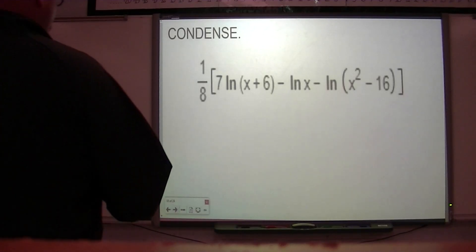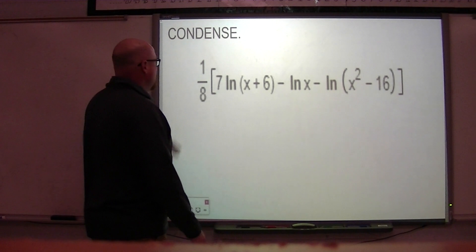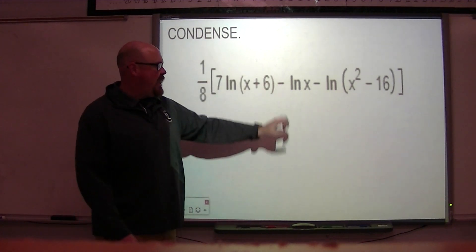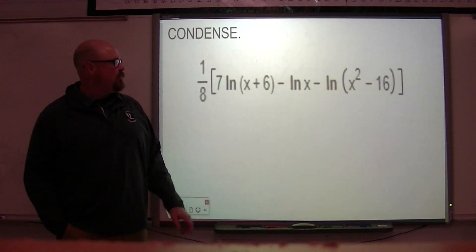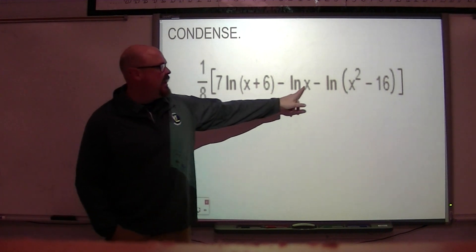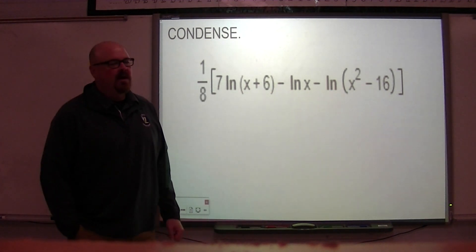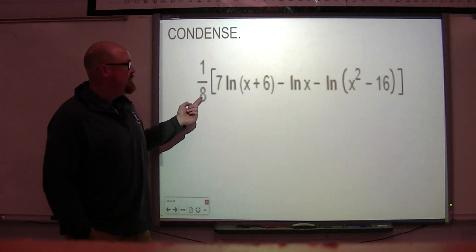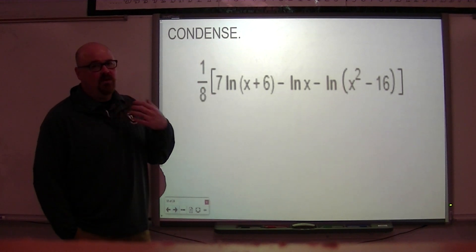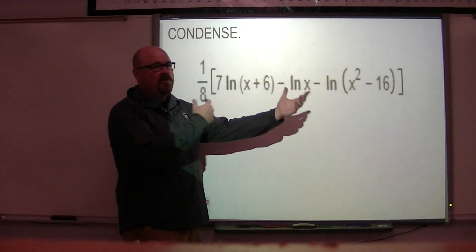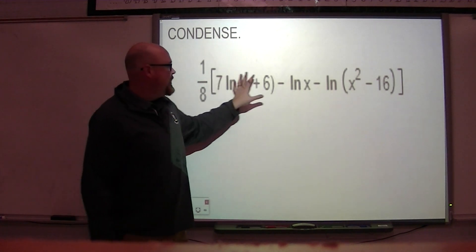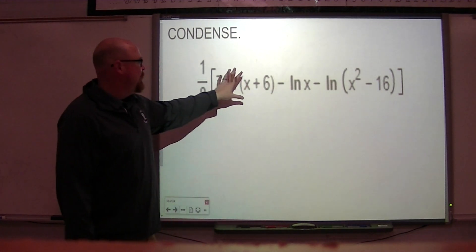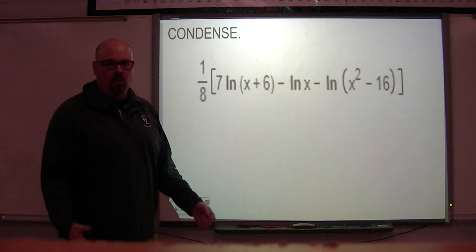Okay, this one's a bit of a rattlesnake. We're condensing this really heinous looking logarithmic expression. We have three logs, they're all natural logs. We have this one-eighth on the outside. Now again, my suggestion when you're going through these is to work from the inside out. So attack all of these logarithms first and then we'll talk about this one-eighth at the end.